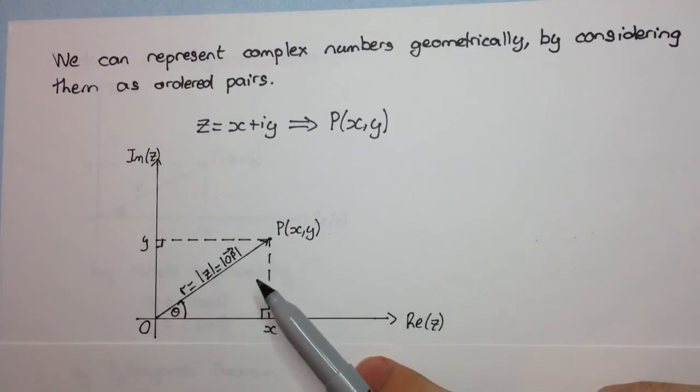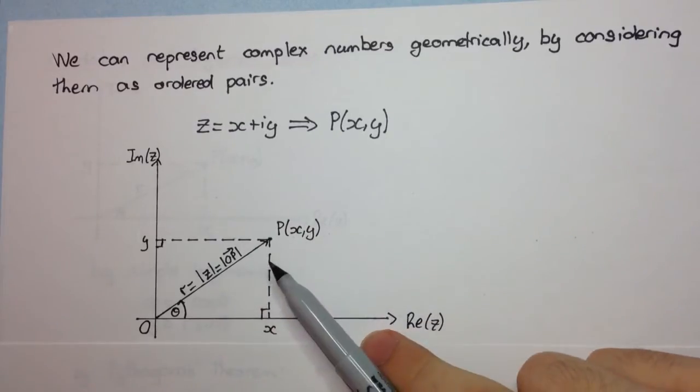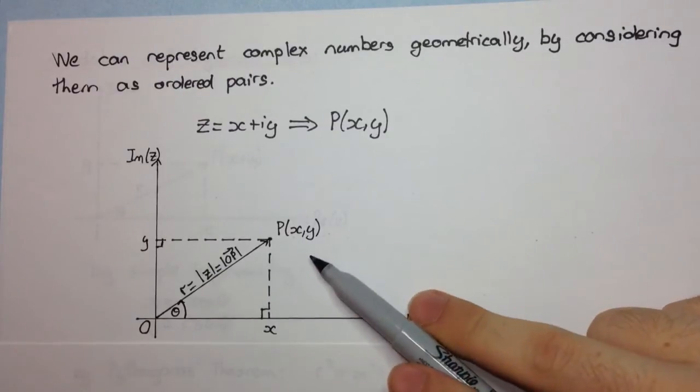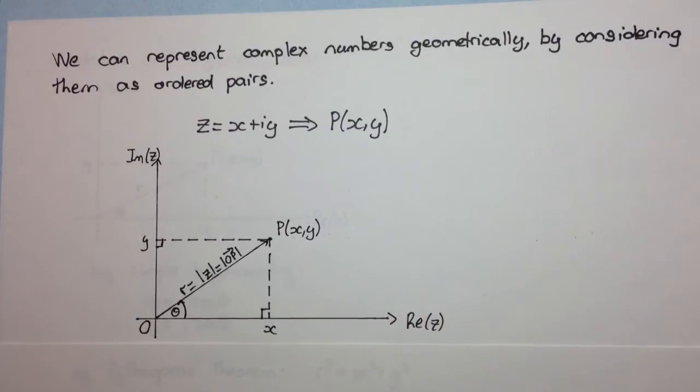Okay, so if we have a point x plus iy, and here I've just taken it to be in the first quadrant, but of course it could be in the first, second, third, or fourth quadrant, it doesn't matter. But this is without loss of generality, so that's fine, we can consider it here.